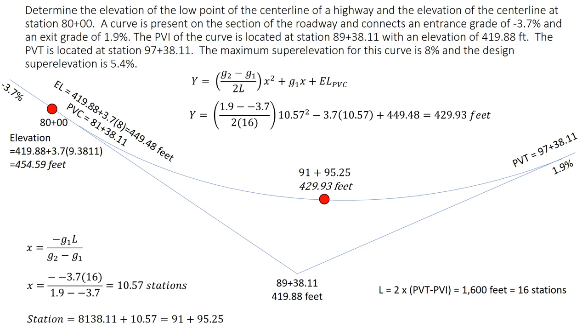Elevation of the low point of the centerline, 429.93 feet. And the elevation of the centerline at station 80, which is 454.59 feet.